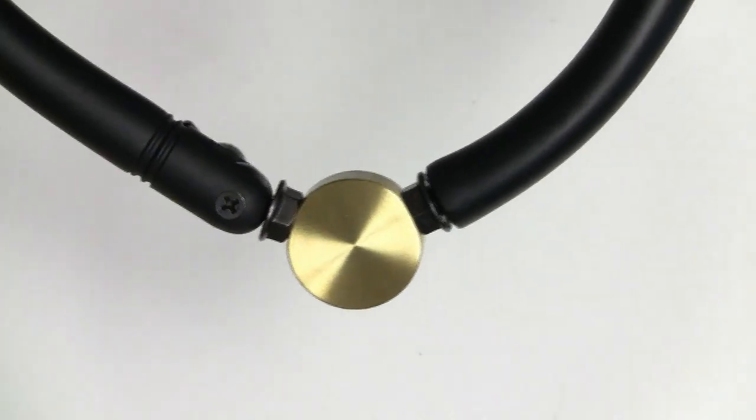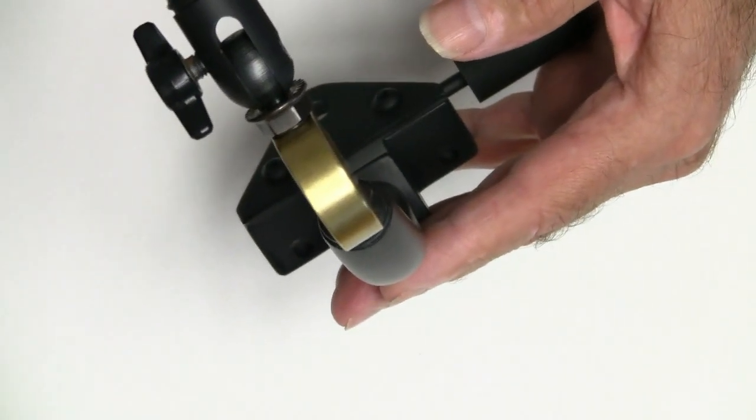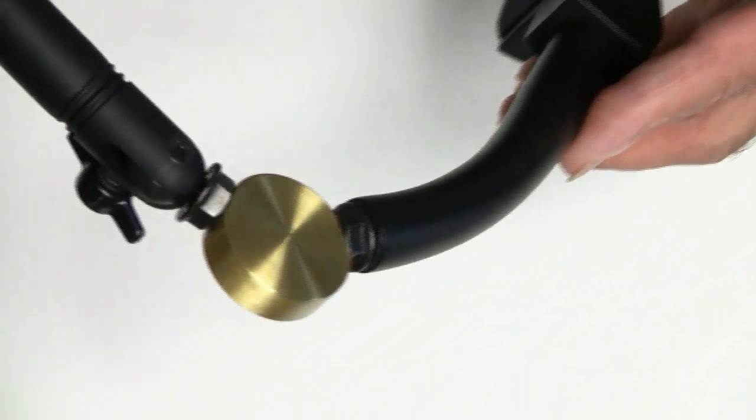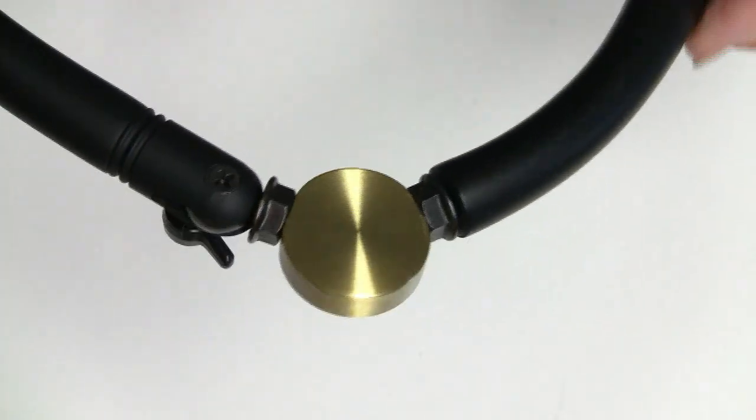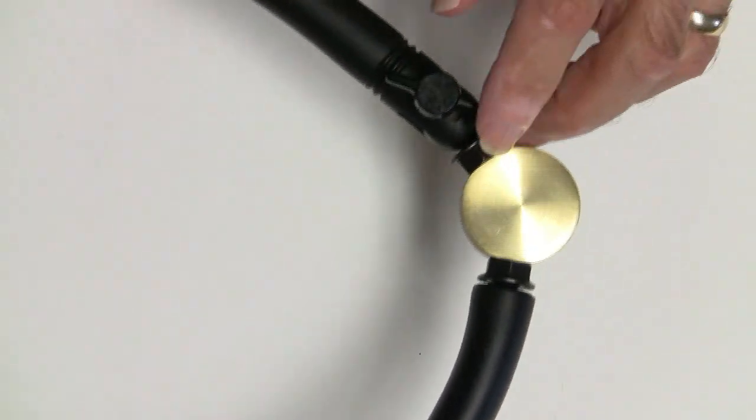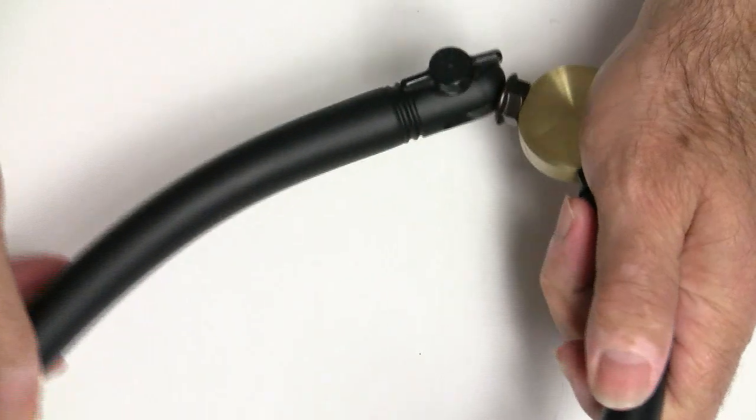I slabbed off a chunk of that and drilled it and tapped it and used that for my center weight. For the adjustable portion, I wanted my arm to be adjustable, this portion right here, so that the lower arm angle—so that I could adjust the angle of the arm itself.